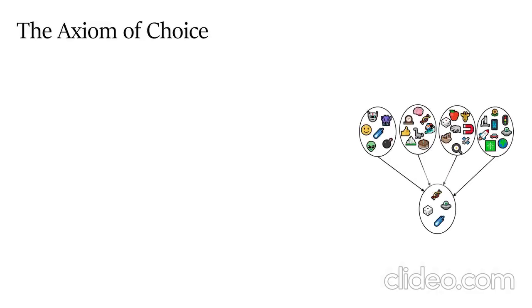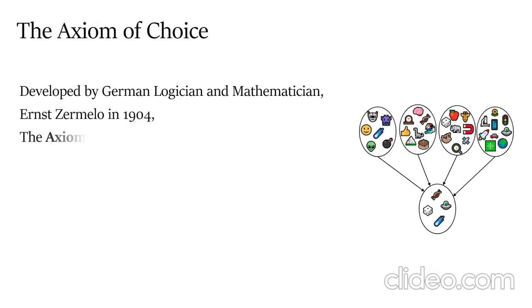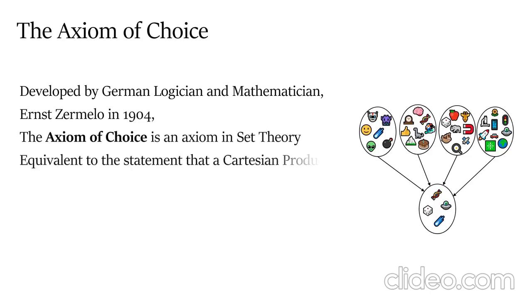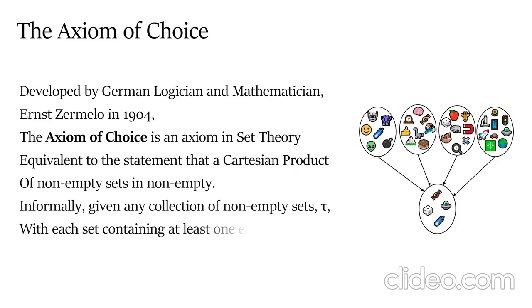The Axiom of Choice, developed by German logician and mathematician Ernst Zermelo in 1904, is an axiom of set theory equivalent to the statement that a Cartesian product of non-empty sets is non-empty. Informally, given any collection of non-empty sets τ, with each set containing at least one element, one can construct a new set by choosing one element from each set.